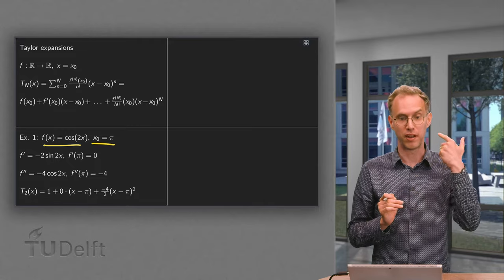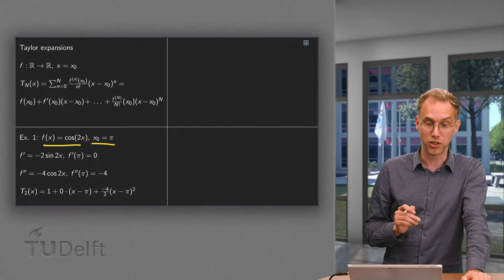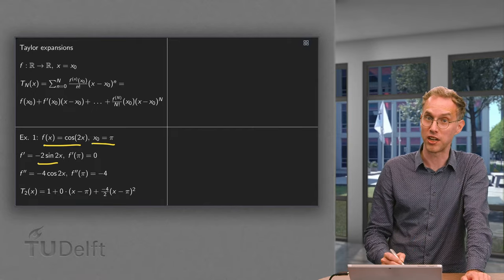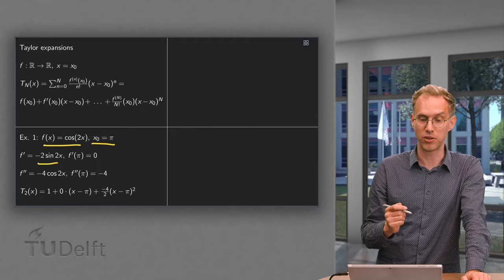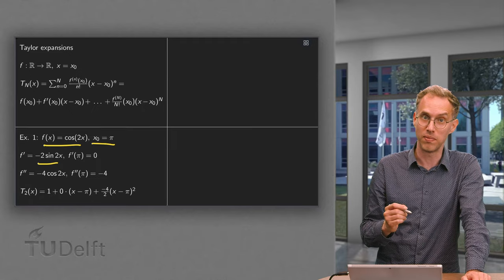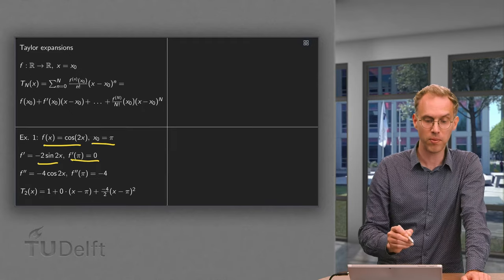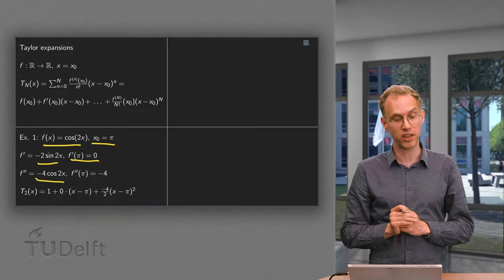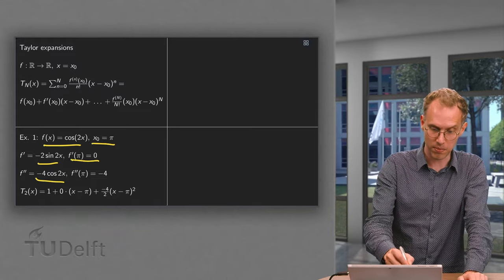For that we need f at x₀, f' at x₀, and f'' at x₀. Well, f at x₀ is just cos(2π) equals 1. f' equals -2 times the sine of 2x. So at x₀, at π, we get -2 times the sine of 2π equals 0.